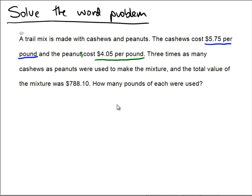And then they give us additional information like three times as many cashews as peanuts were used and they give us the total value of the mixture. The question is asking us to find how many pounds of each were used. So to figure out the amount of money we would have to figure out how many pounds were used and multiply that by the cost per pound. That's going to give us the total amount of money.